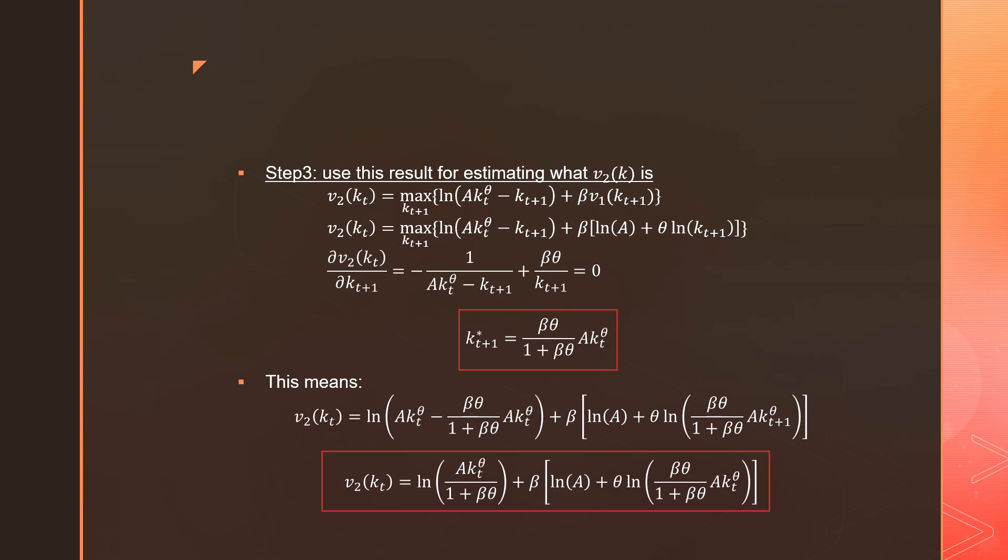So this means that if we want to identify what v₂(k), the second iteration of our value function equals, we get the following result at the bottom box in red.